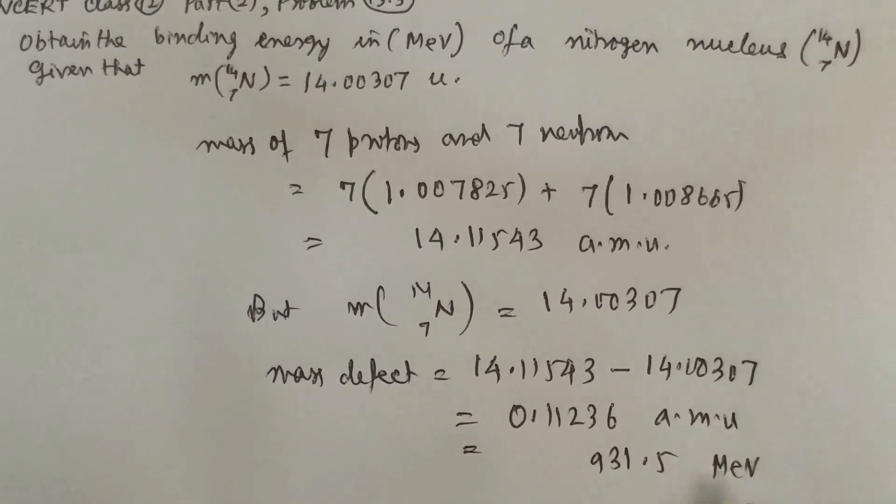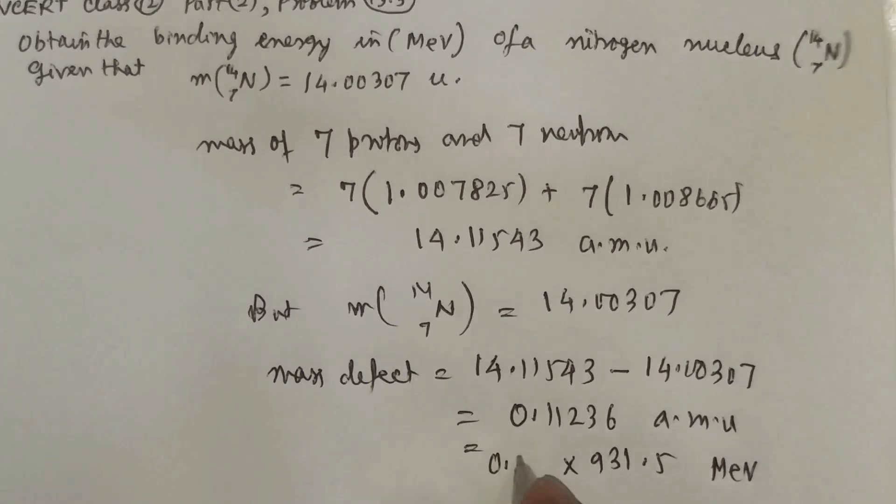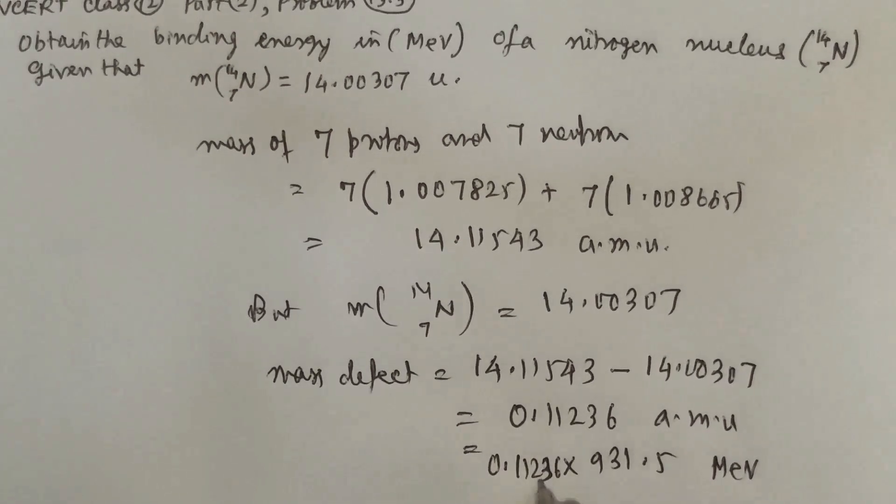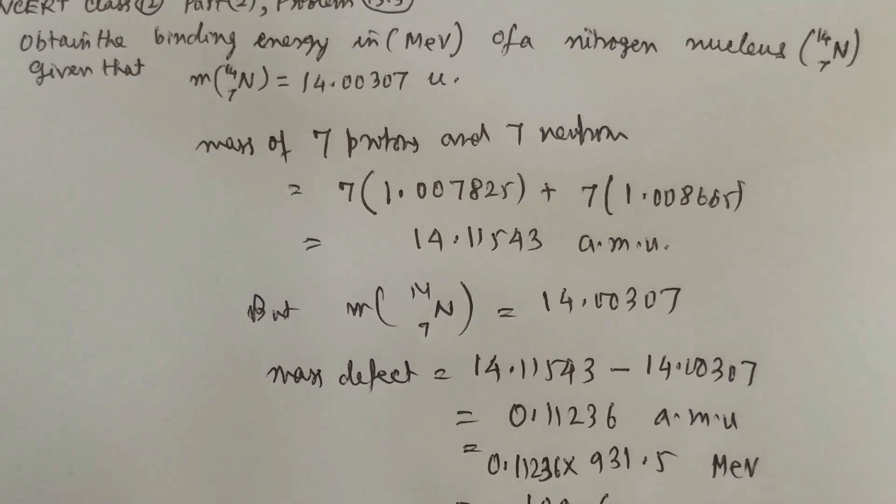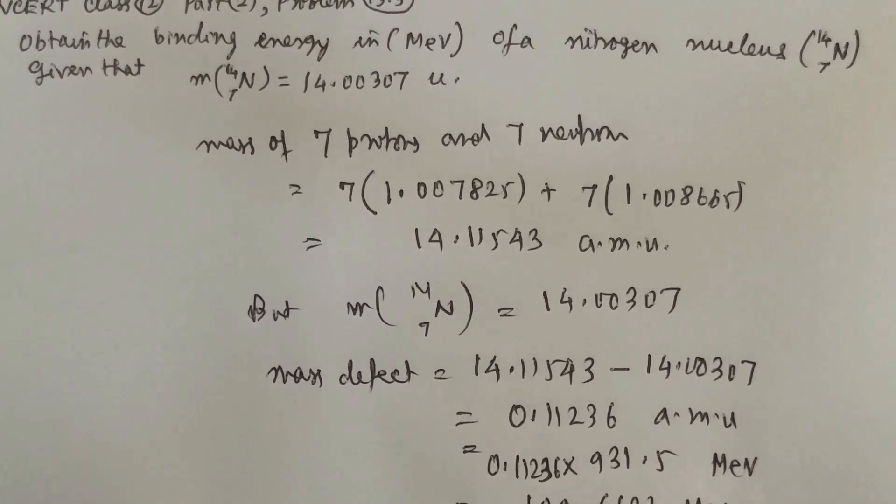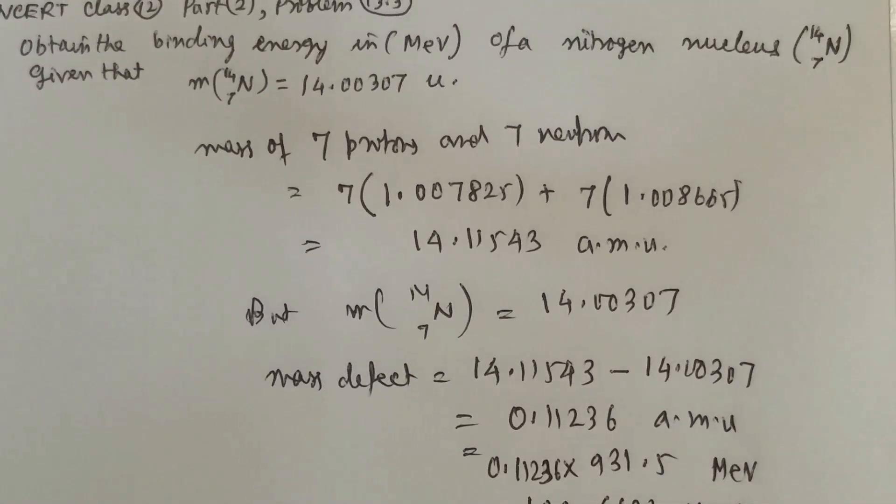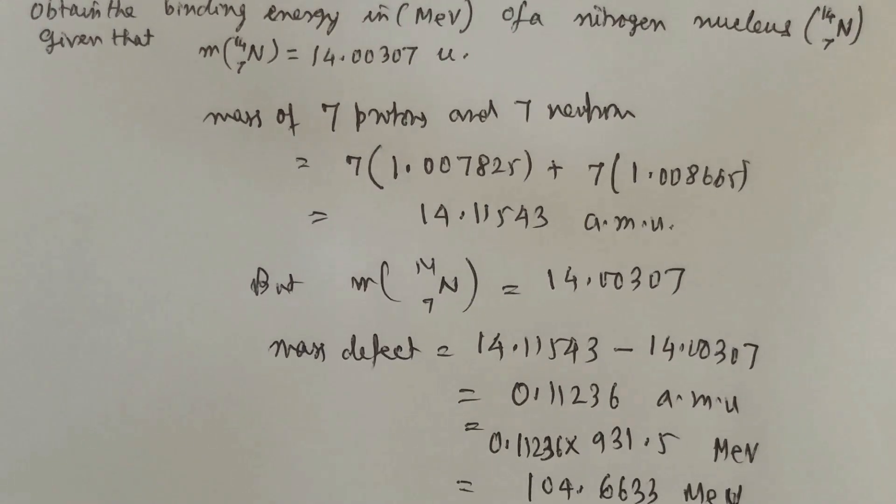So it will be obtained after multiplying with this, so we have 104.6633 million electron volts of energy. That's the binding energy of that nucleus.